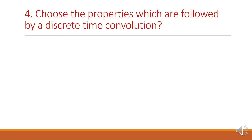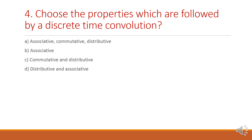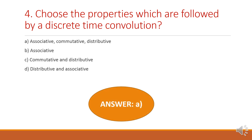Next question: choose the properties which are followed by discrete time convolution. Option A: associative, commutative, distributive. Option B: associative. Option C: commutative and distributive. Option D: distributive and associative. Convolution properties are associative, commutative and distributive. So option A is the right answer.